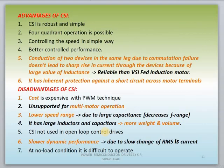The Id* reference value is generated in the flux control block, controlled with Id, passed through a current controller, and firing angles are generated to control the fully controlled rectifier. The advantages of CSI are: it is robust and simple, four-quadrant operation is possible, speed control is simple, and it offers better controlled performance. Conduction of two devices in the same leg due to commutation failure does not lead to sharply rising current through the devices, because of the large inductance value.